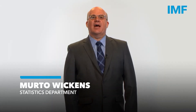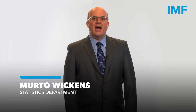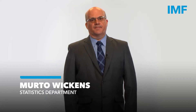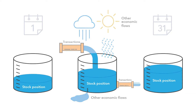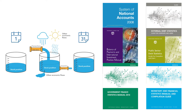Let's take a closer look at how we define stock positions and the boundary of assets we record in macroeconomic statistics balance sheets. Stock positions are the total holdings of assets and/or liabilities at a point in time, and we record them in a unit's balance sheet. To discuss stock positions in the context of macroeconomic statistics, we must first determine the asset boundary of macroeconomic statistics.